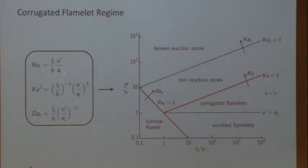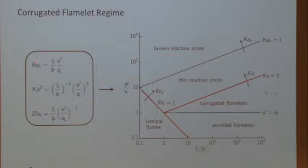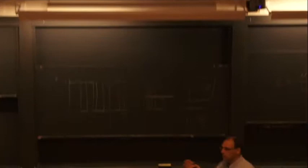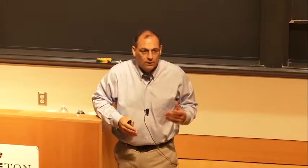If I bring the Reynolds number relation over, U prime/S_L equals Re_T times L_F/L_T. On a log-log scale, setting Reynolds equal to 1 gives a line where below is laminar and above is turbulent. The transition might be at Re=10 or Re=0.1 — we're talking about scaling analysis, not exact values.